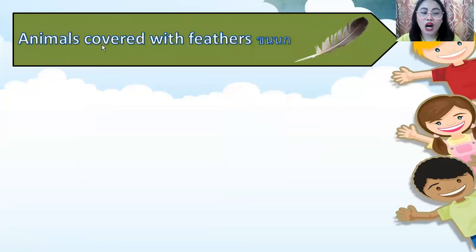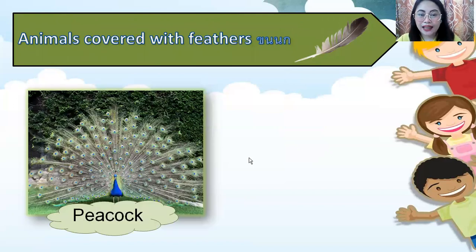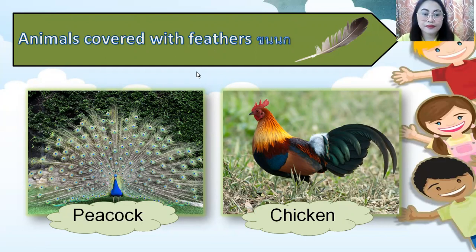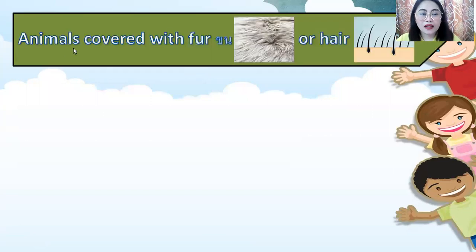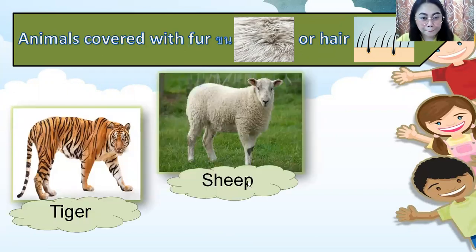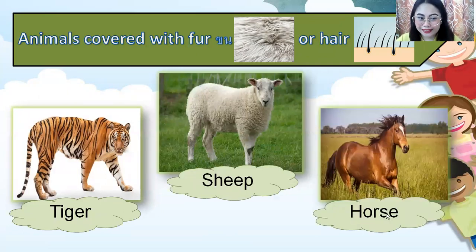Animals covered with feathers — peacock and chicken are animals covered with feathers. Animals covered with fur or hair include tiger, sheep, and horse. These are animals covered with fur or hair.